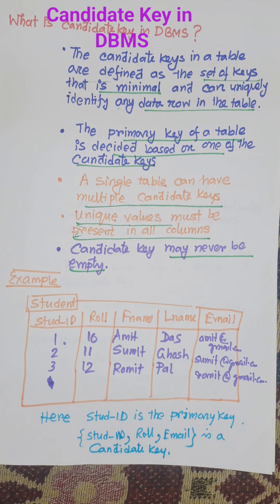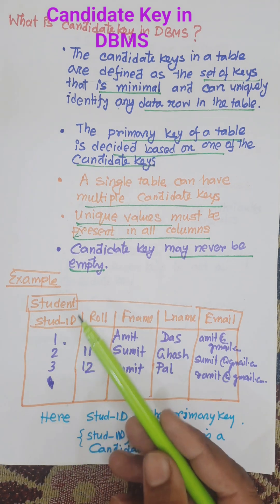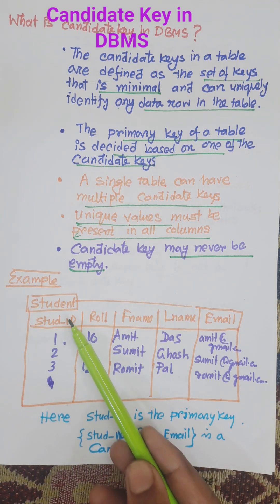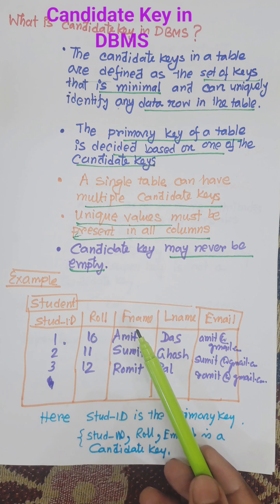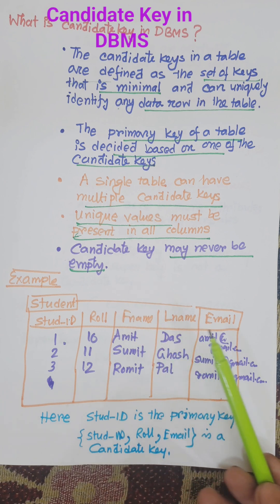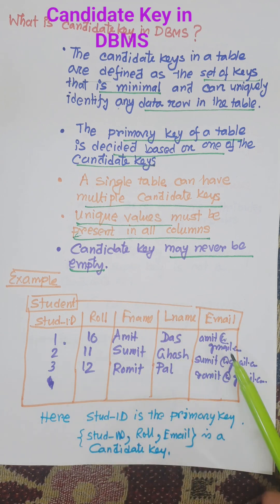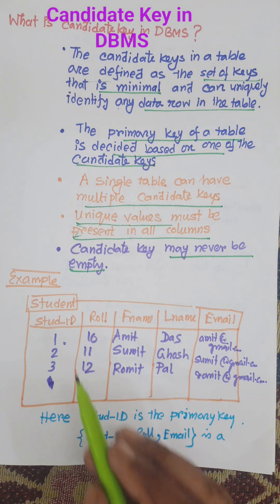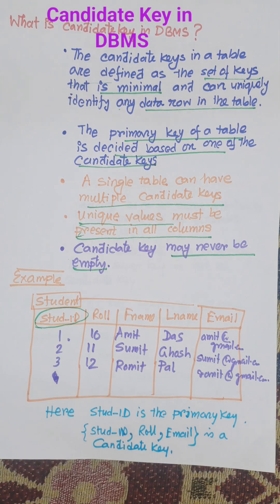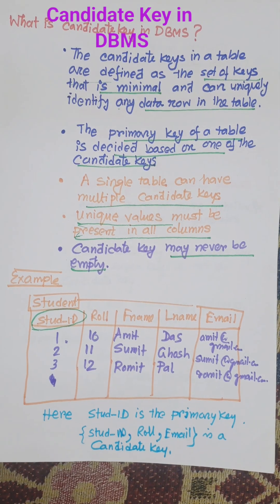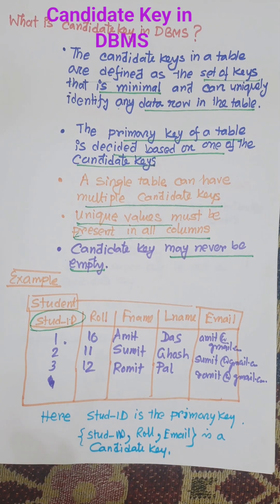Let us consider an example. Consider the student table, which consists of student ID, role, first name, last name, and email. We can say student ID is the primary key. The primary key is also a candidate key.